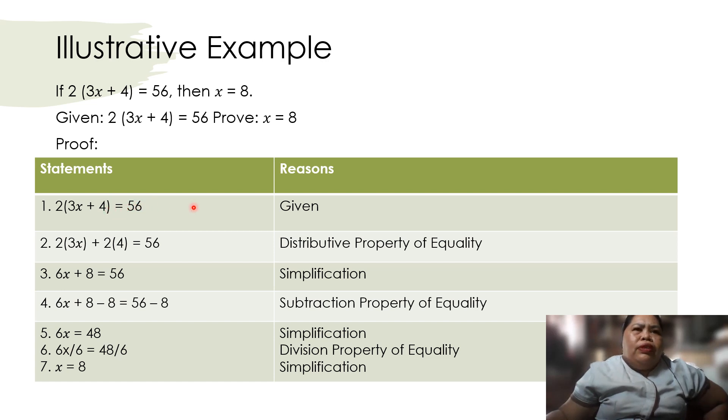Here is the proof and the statement. Of course, 2 times the quantity 3x plus 4 is equal to 56, it's given. And then, 2 times 3x plus 2 times 4 is equal to 56. That is distributive property. What we do here is let's distribute this one. That's why we get the distributive property.